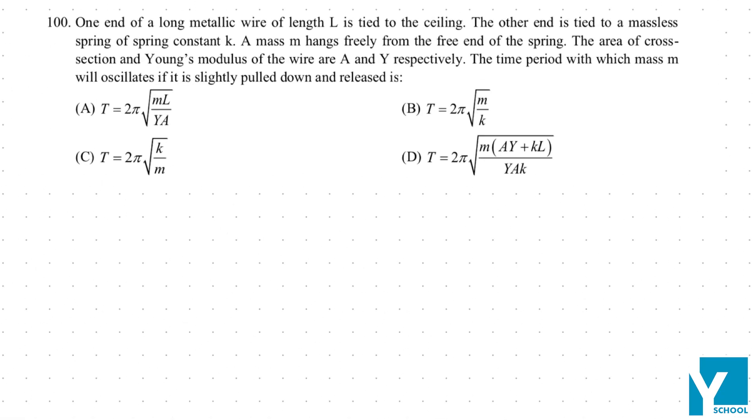One end of a long metallic wire of length L is tied to the ceiling. First of all, you have made a long metallic wire. The length L is given to you.